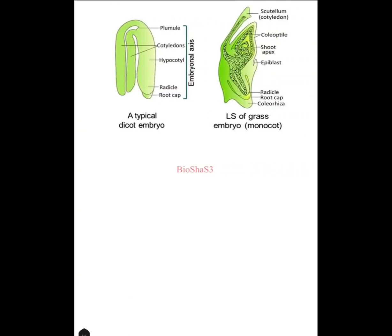A very important diagram for three marks is the typical dicot embryo — showing plumule, cotyledon, hypocotyl, radicle, root — this is the embryonal axis. In case of the monocot embryo, you have to show the scutellum, coleoptile, shoot apex, epiblast, radicle, root cap, and coleorhiza. The coleorhiza is a protective sheath of the root and the coleoptile is the protective covering of the plumule. These are very important diagrams from Chapter 2 — students, you cannot miss these.